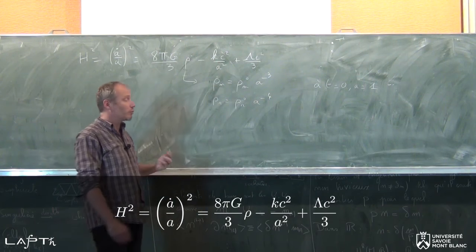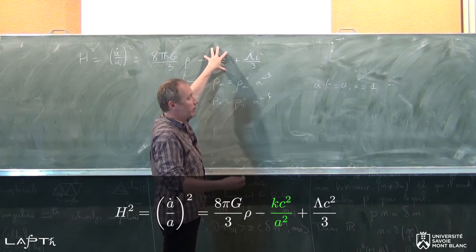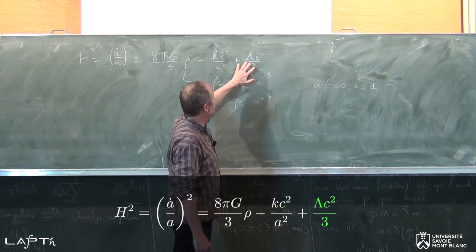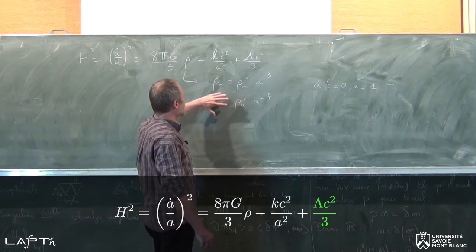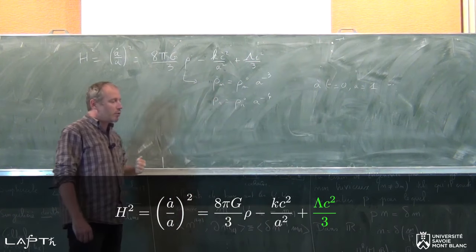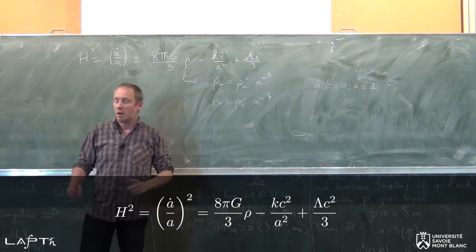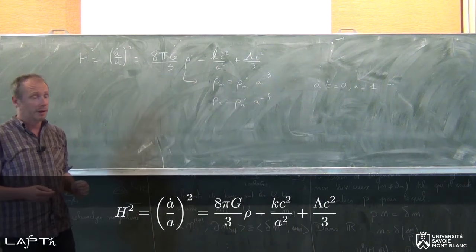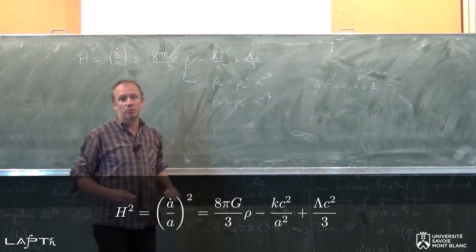Il se trouve aussi qu'on vit dans un univers dans lequel ce terme de courbure semble être nul. Toutes les mesures sont compatibles avec le fait qu'on soit dans un univers qui est plat. Et cette composante de constante cosmologique ne devient dominante que tardivement dans l'histoire de l'univers, à une époque où le rayonnement est devenu complètement négligeable. Donc quand on veut étudier les époques relativement récentes de l'histoire de la cosmologie, il suffira de considérer le terme de matière et le terme de constante cosmologique. Dans toutes les étapes importantes de l'histoire de l'univers, il n'y a que deux composantes à considérer, et dans ces situations-là, on peut effectivement résoudre l'équation de Friedman-Lemaître.